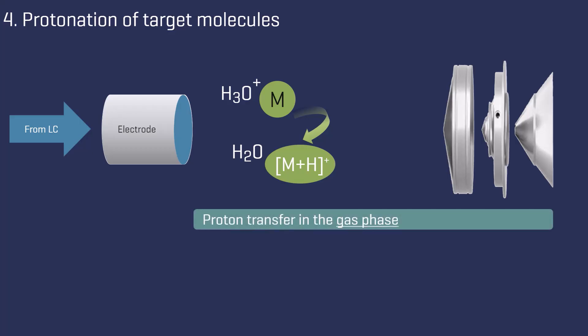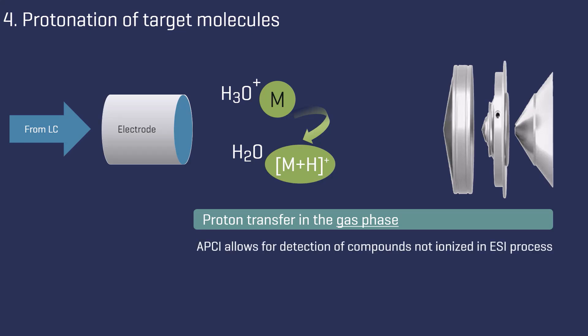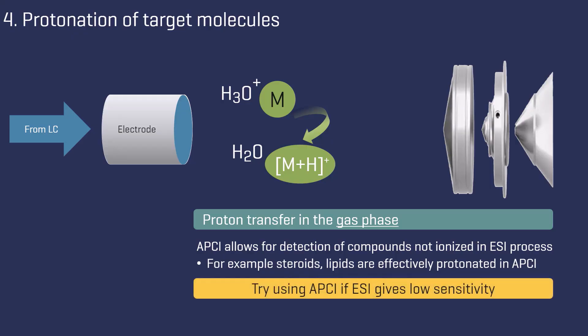This process occurs in the gas phase. Unlike electrospray ionization, where it takes place in the liquid phase, gas phase proton transfer allows for the detection of compounds that do not easily ionize in liquid, such as steroids and lipids, which are effectively protonated in APCI. So try using APCI if ESI gives low sensitivity.